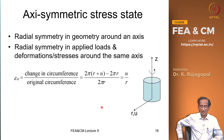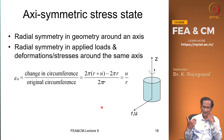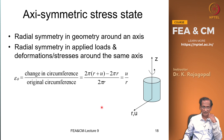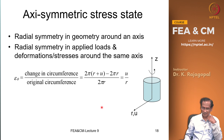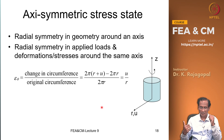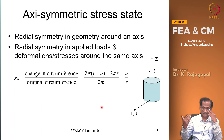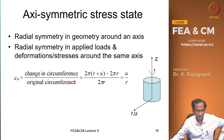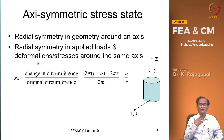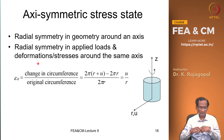There is one more simplification: the axisymmetric case, where there is radial symmetry in both the geometry and the loading. In that case, we can consider a section and do the analysis in the two-dimensional framework.